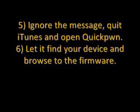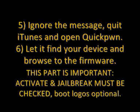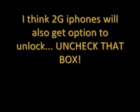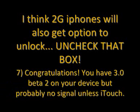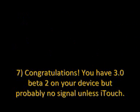Step 5: Ignore the message, quit iTunes, and open QuickPwne. Step 6: Let it find your device and browse to the firmware. It is important that 'Activate' and 'Jailbreak' must be checked; 'Boot Logo' is optional. I think 2G phones will also get the option to unlock — uncheck that box. Step 7: You now have 3.0 beta 2 on your device, but probably no signal unless it's an iPod Touch.